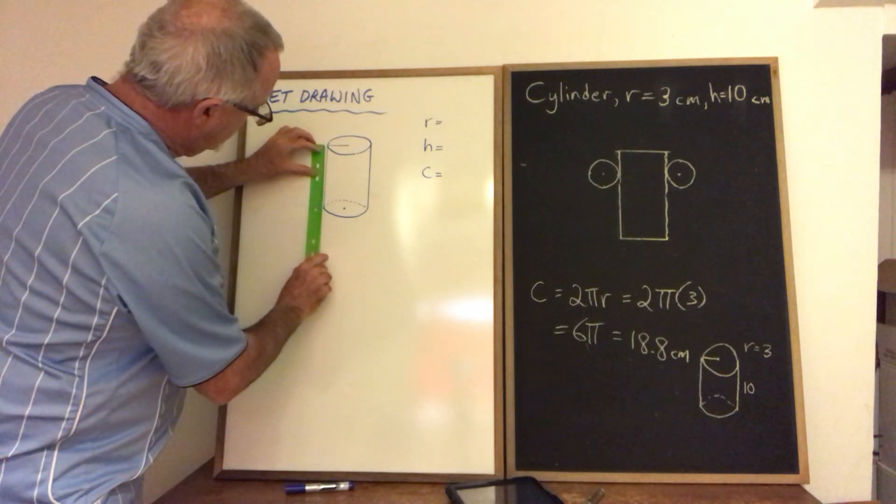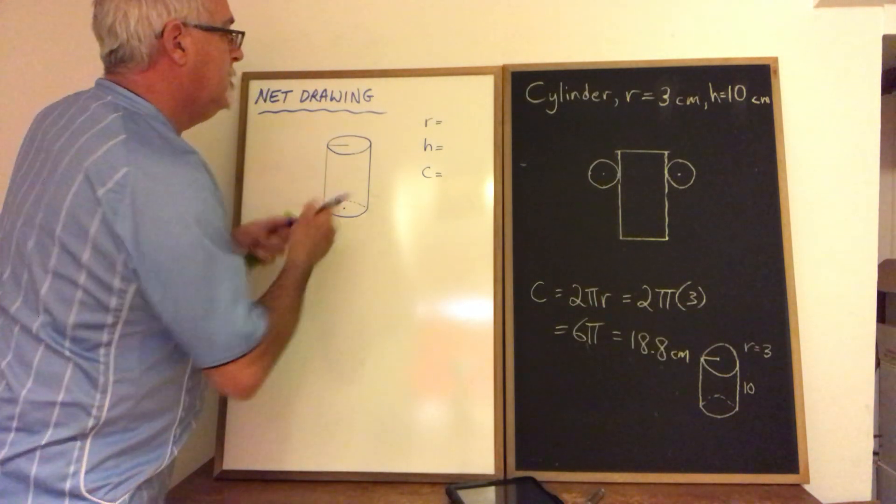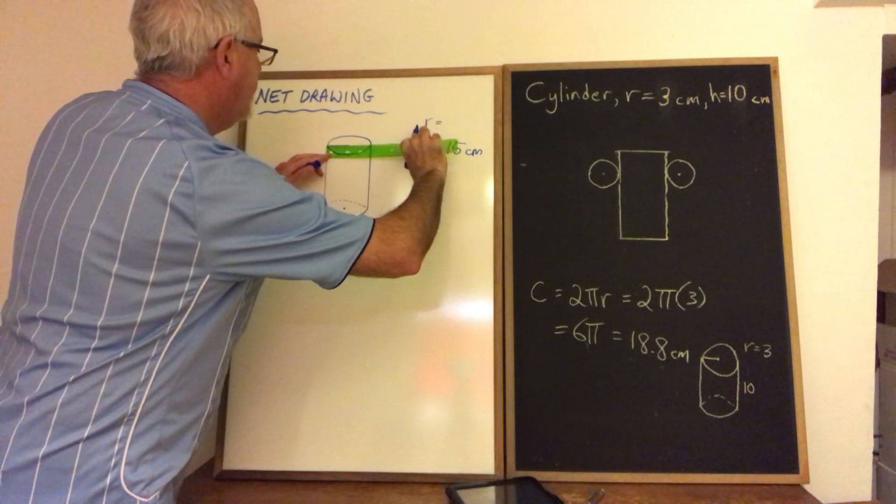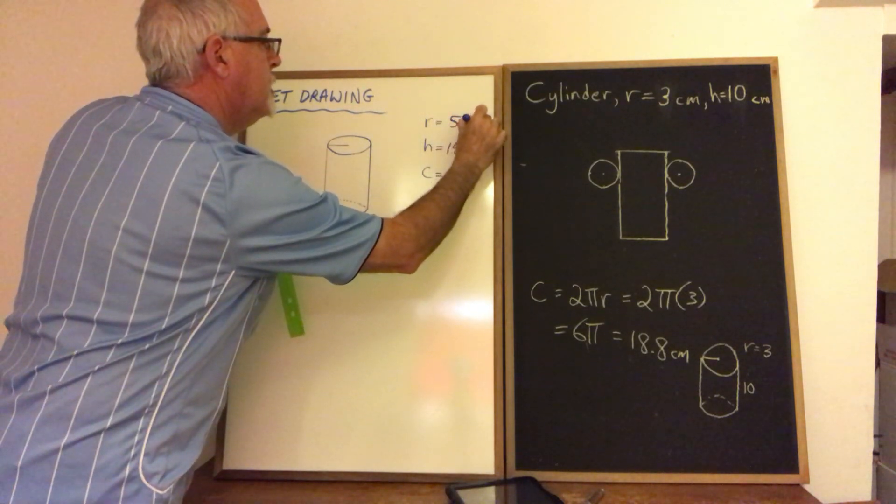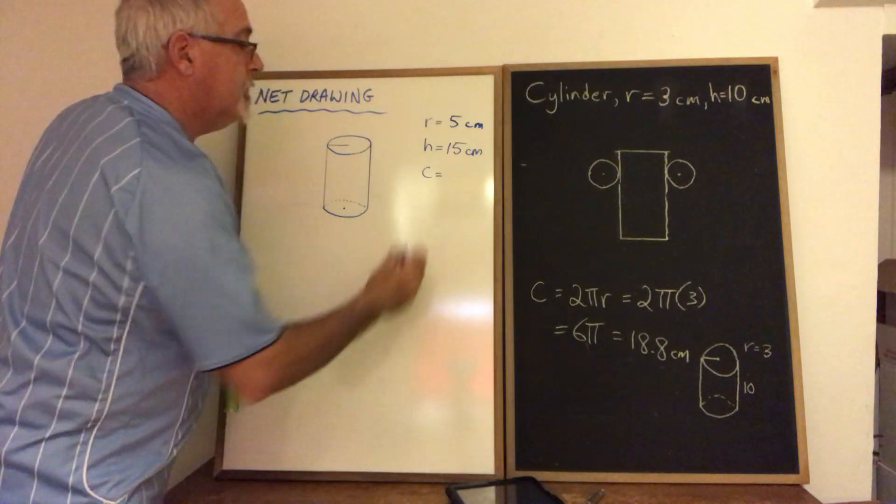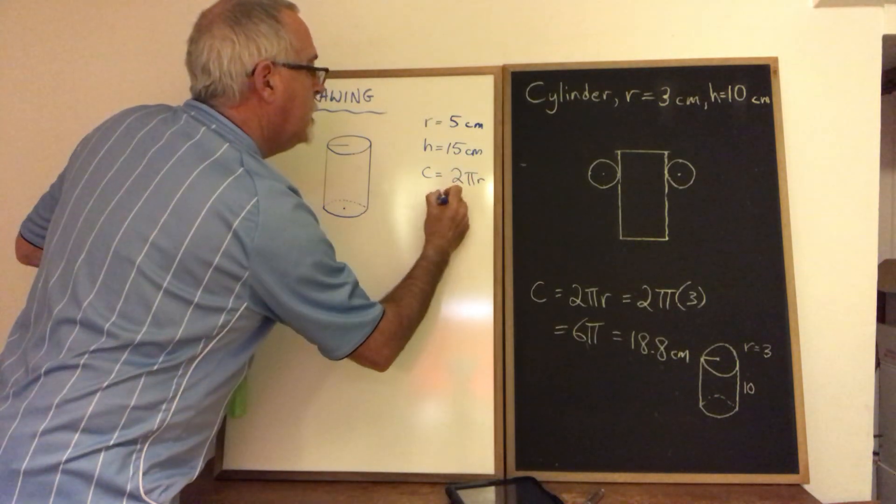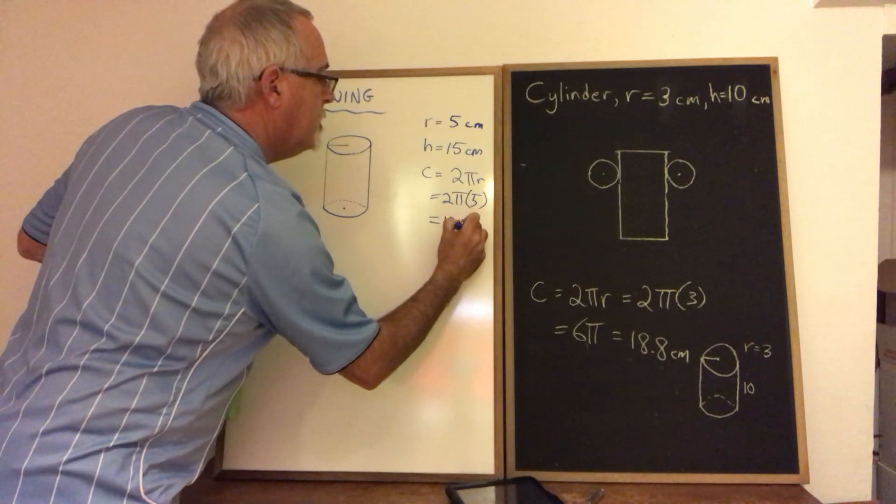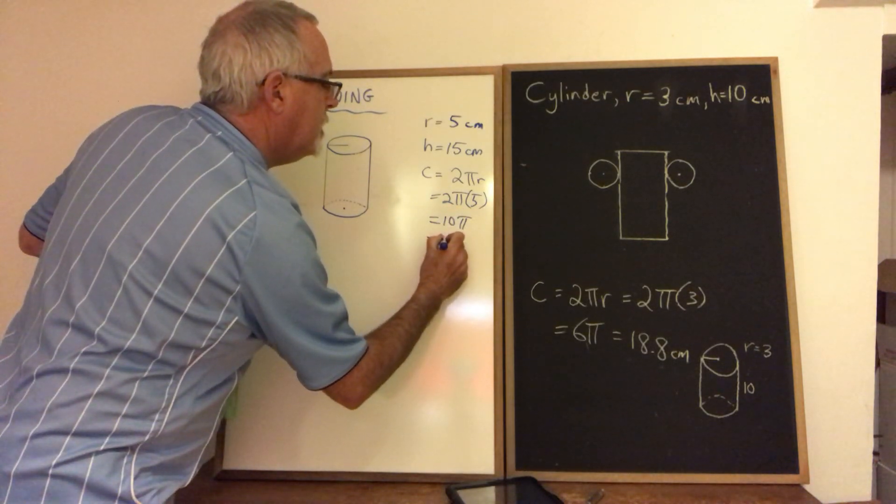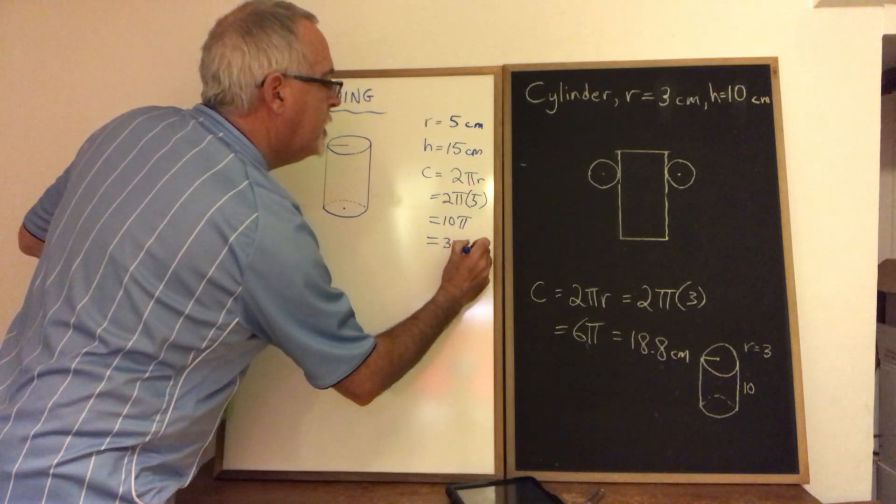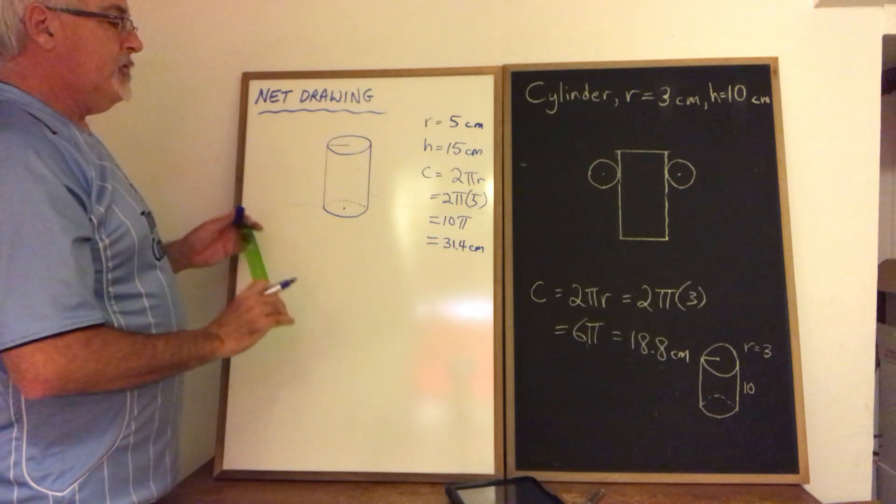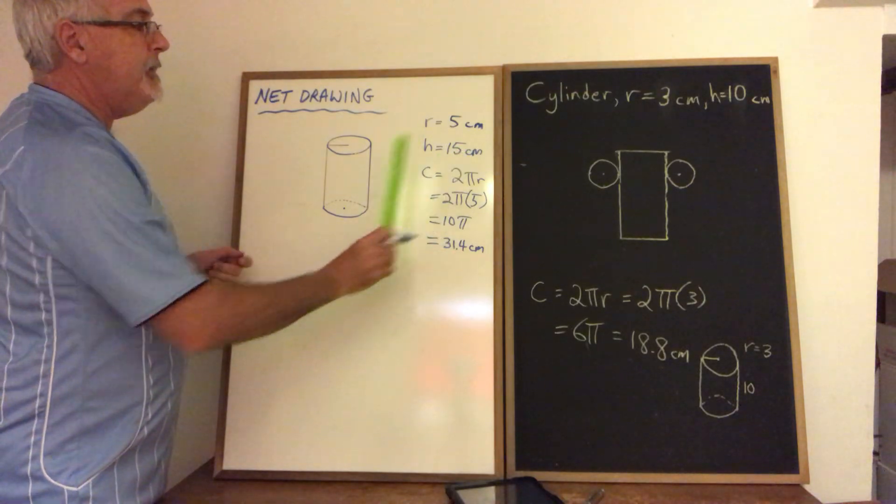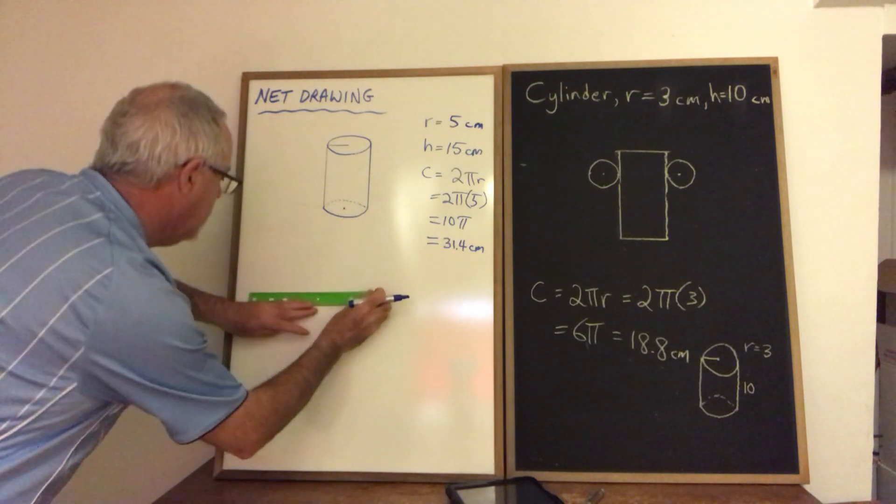So the height of this is 15 centimeters. The radius is 5 centimeters. And the circumference I have to calculate in the same way using this formula, which is 2 times pi times 5, which is 10 pi. So it will be 31.4 centimeters. I have to draw a rectangle with a 31.4 centimeter long side and a 15 centimeter short side. So I'm going to do that next.